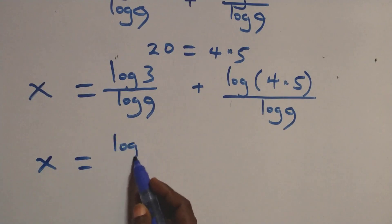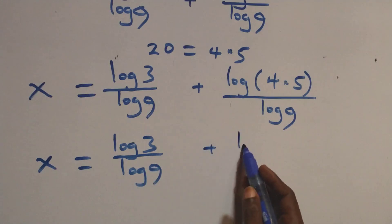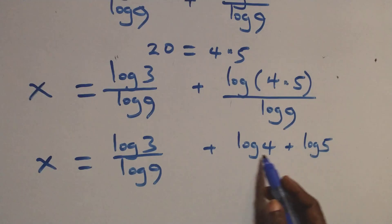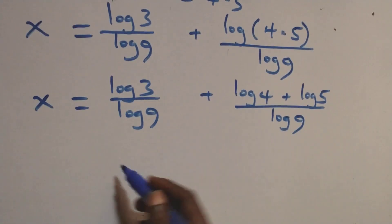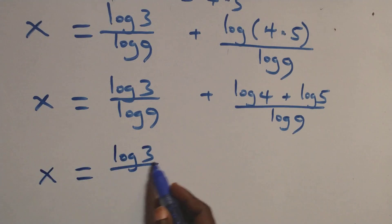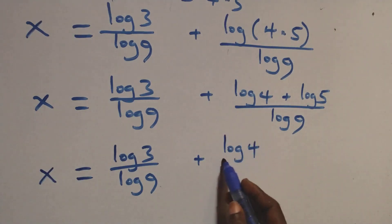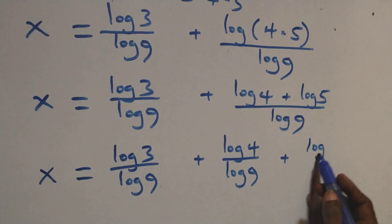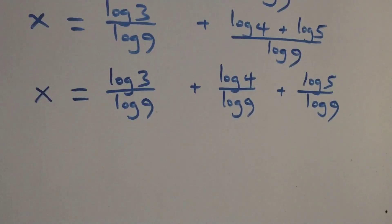Next, we write 20 as 4 times 5 and apply the product rule again: log(20) = log(4) + log(5). Separating into fractions gives x = log(3)/log(9) + log(4)/log(9) + log(5)/log(9).